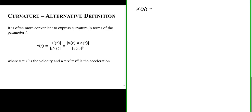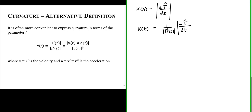We know that curvature is defined as the rate of change of a unit tangent vector with respect to arc length. If curvature is expressed in terms of a parameter t, then the curvature is given as 1 over the speed of the curve — the velocity with respect to parameter t — times the derivative of the unit tangent vector with respect to t. This is equivalent to the magnitude of the cross product between a curve's velocity and its acceleration, divided by the speed of the curve cubed.